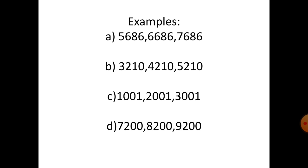Number B: three thousand two hundred and ten — plus one thousand — four thousand two hundred and ten — plus one thousand — five thousand two hundred and ten. Number C: one thousand and one, two thousand and one, three thousand and one.